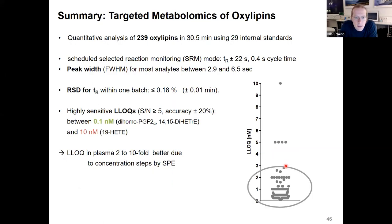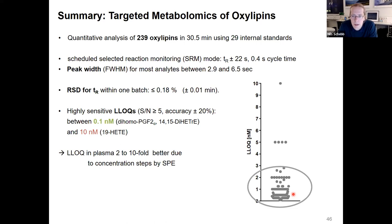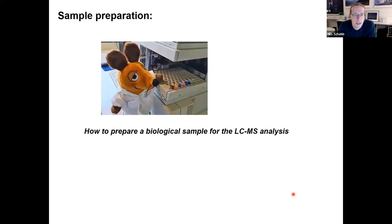This brings me to the first summary. I hope I could show you some details on how to set up the instrumental parameters for oxylipin analysis. In the end, we typically end up with a limit of quantification around one picogram on column, depending on the compound — some are more sensitive, some a little less, depending on ionization efficacy and fragmentation behavior. However, the much larger challenge than setting up the method is really understanding how to get the biological sample into the mass spec.